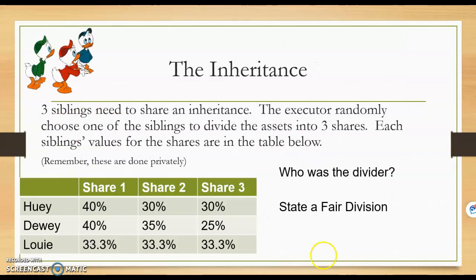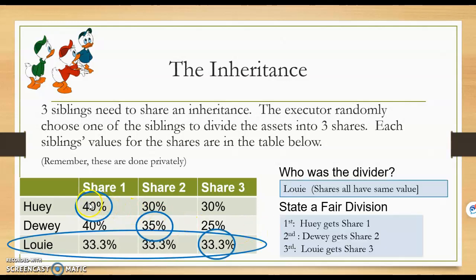Let's apply this to Huey, Dewey, and Louie sharing an inheritance. The executor randomly chose Louie as the divider — we can confirm this because each share has the same value to Louie. Each player is entitled to one-third, or 33⅓%, of the total value. For Huey, only share one is a fair share. For Dewey, shares one and two are fair shares. For Louie, all three shares are fair. Therefore, a fair division is: Huey gets share one, Dewey gets share two, and Louie gets share three.